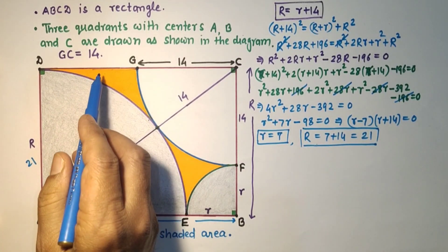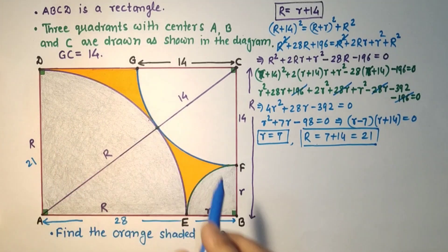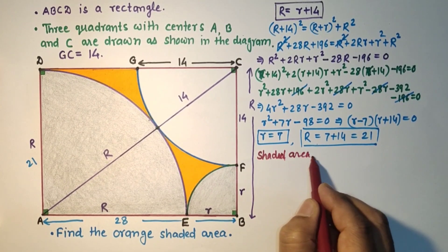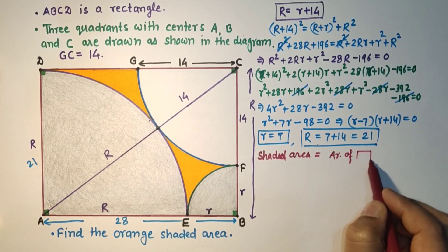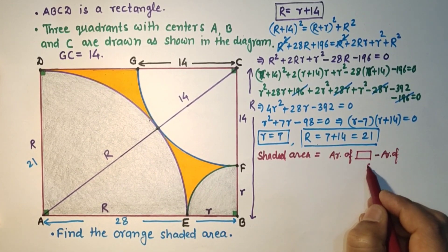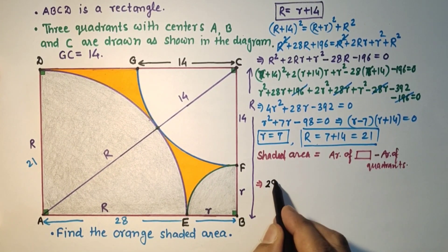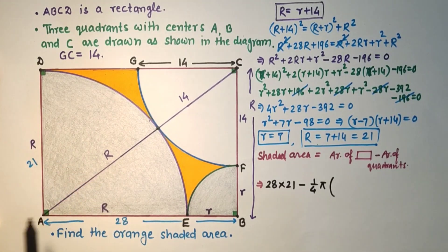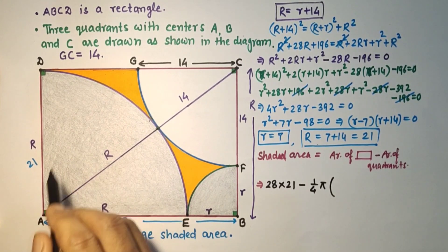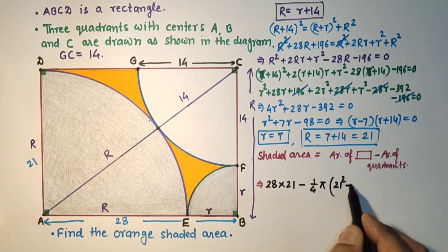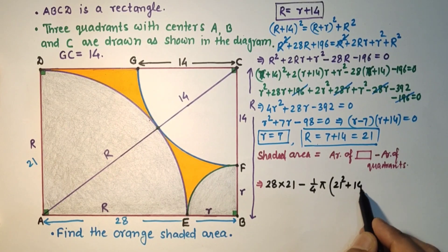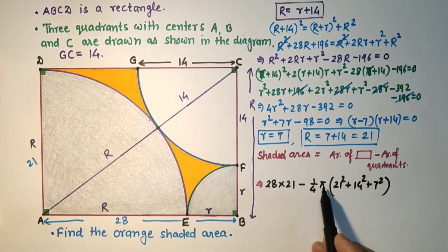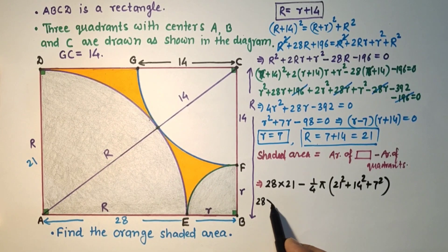So the area of the orange shaded portion will be area of the rectangle minus area of the 3 quadrants. That is: area of rectangle ABCD minus (1/4)πR² minus (1/4)πr² minus (1/4)πr², where R = 21, the large radius is 14, and the small one is 7.